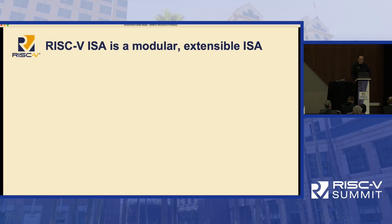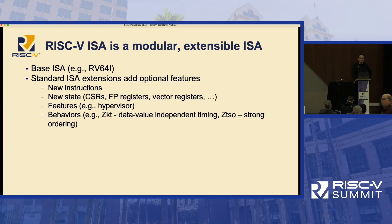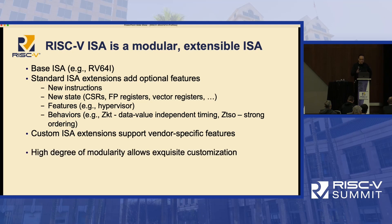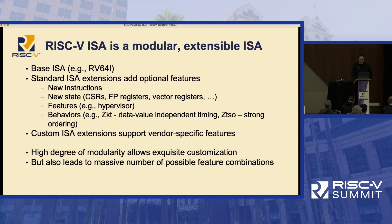We all know RISC-V is a modular, extensible ISA. There's a base ISA, there are standard ISA extensions that add new features, and you can have custom ISA extensions. This is great, and nobody wants to get rid of this flexibility because a lot of products want exactly this — it's a way of exquisitely customizing what you have in your core for a particular use case. The problem is there's a massive number of possible feature combinations, and a lot of people get scared thinking how can we possibly manage all these different features, even though in reality it's really no different than any other architecture.